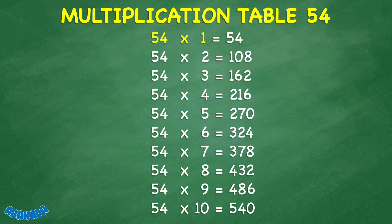54 times 1 equals 54. 54 times 2 equals 108. 54 times 3 equals 162. 54 times 4 equals 216.